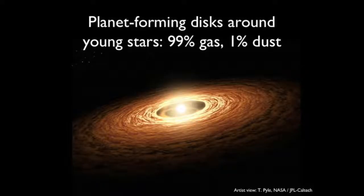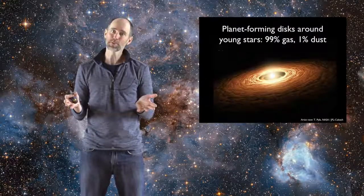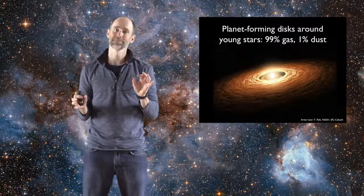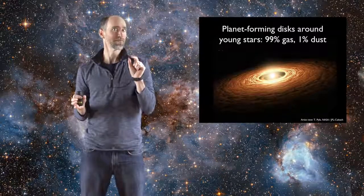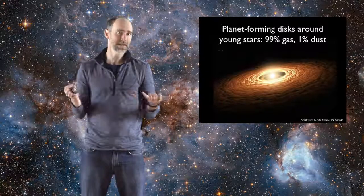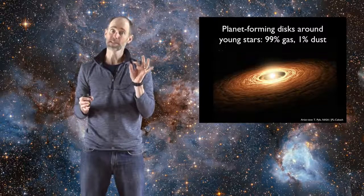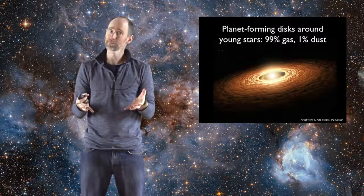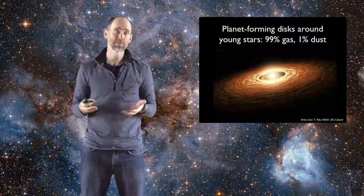Planets form in disks around young stars, and these disks are mostly gas. 99% gas, about 1% dust. And even though it's only a small fraction of the total amount of stuff, we really care about that 1% dust because Earth, for example, is made entirely of that 1%. So the dust is important.